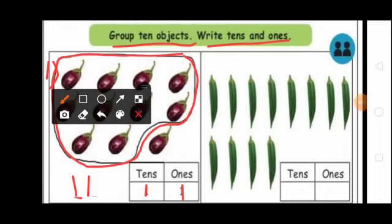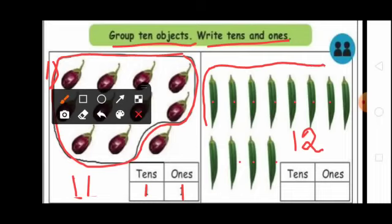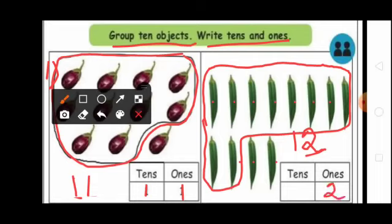Students, see the next picture. Here many ladies fingers are given. First, you count the ladies fingers: 1, 2, 3, 4, 5, 6, 7, 8, 9, 10, 11, 12. 12 ladies fingers are given. First, you circle the 10 ladies fingers. Next, you write ones and tens. How many ones in 12? 2 ones. So ones place you write 2. How many tens in 12? 1 — 10. So tens place you write 1.